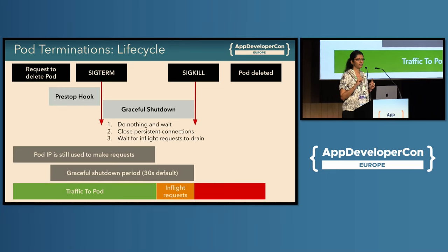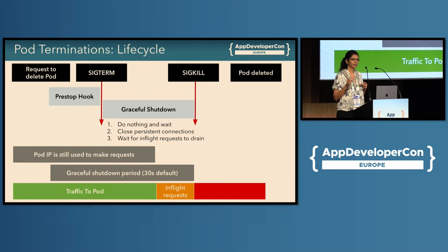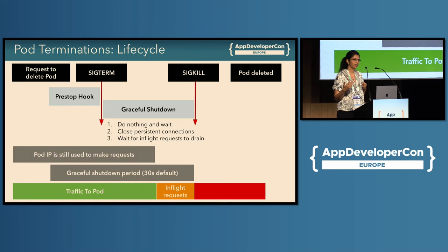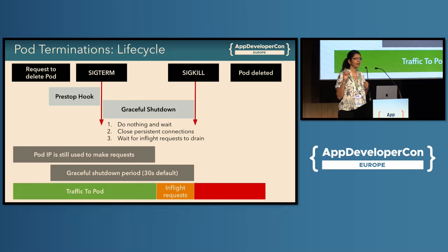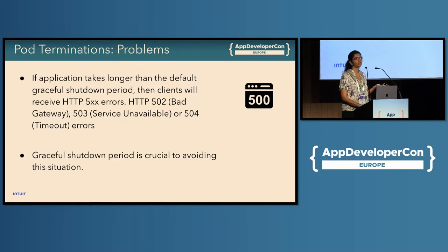At some point between SIGTERM and SIGKILL, your IP is still in use and there are in-flight requests to handle. Make sure you drain those requests and exit gracefully. The graceful shutdown default is 30 seconds — Kubelet will send SIGKILL 30 seconds after SIGTERM. If you need more time to handle in-flight requests, you can override this using the termination grace period seconds option. Without doing this, your clients will end up getting 500 errors.